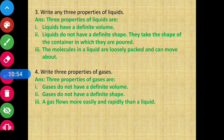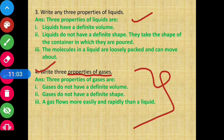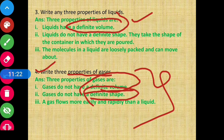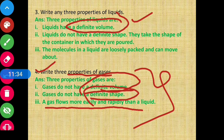Question number 4 - write 3 properties of gas. First, gas does not have definite volume. Second, gas does not have definite shape. Third, a gas flows more easily and rapidly than a liquid - क्योंकि gas के molecules बहुत दूर-दूर रहते हैं, उन्हें move करने के लिए ज़्यादा space मिलता है जिससे वो और जल्दी move कर पाते हैं।